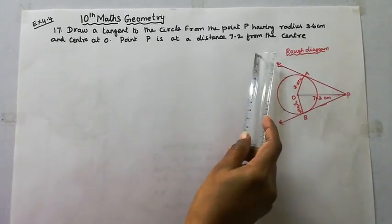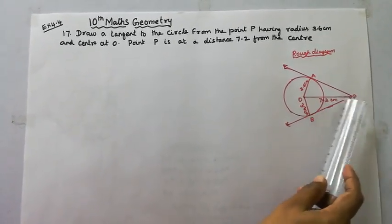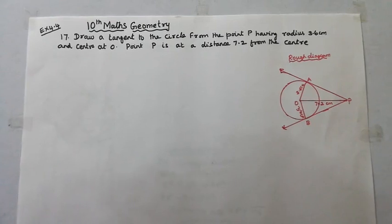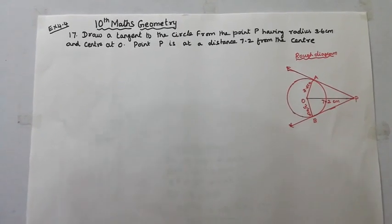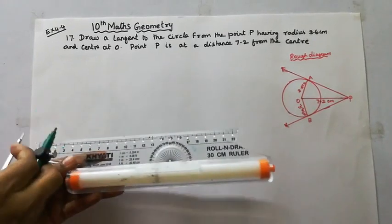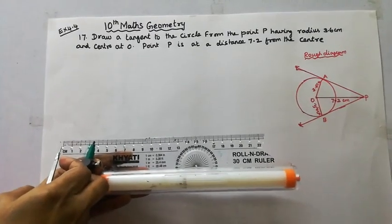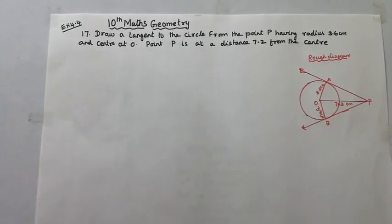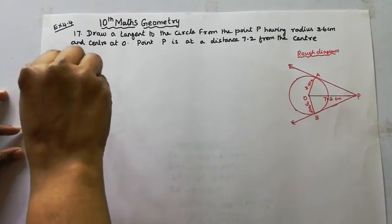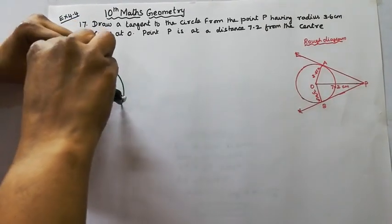PA and PB are the tangent distances. This is a rough diagram. Steps of construction: first, the radius is 3.6 cm. Now draw the circle with radius 3.6 cm.